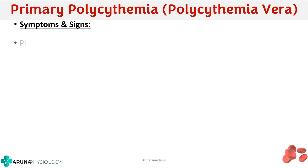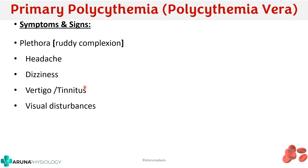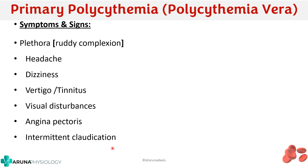Reviewing the symptoms and signs: the patient has plethora or ruddy complexion; headache, dizziness, vertigo, tinnitus, and visual disturbance — all due to viscous blood causing abnormal cerebral blood flow producing CNS symptoms. You can also have angina pectoris and intermittent claudication, meaning blood flow to leg muscles is compromised due to embolus formation or high blood viscosity. And of course, pruritus.